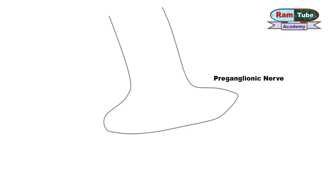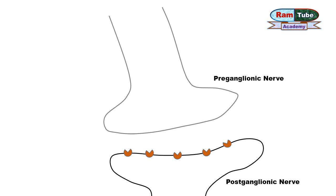This is the preganglionic nerve fiber and this is the postganglionic nerve fiber, which has cholinergic receptors. The gap between the preganglionic and postganglionic nerve is known as the synapse.